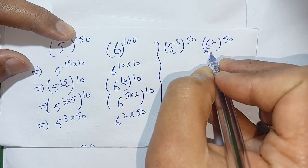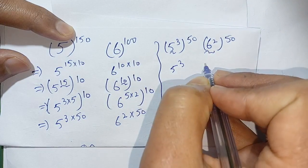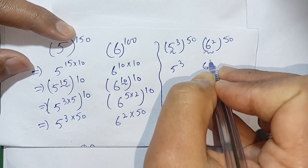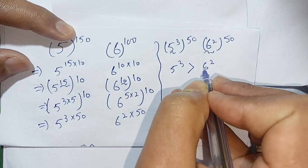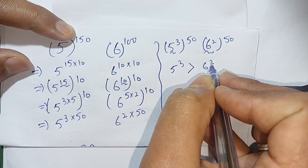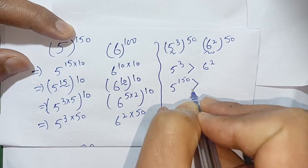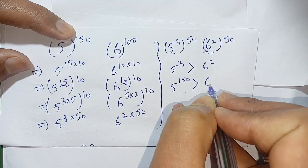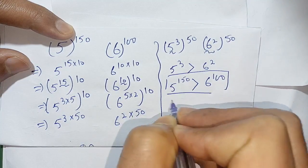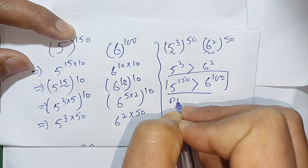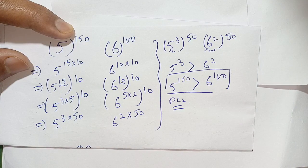Now we can compare the bases: 5 raised to power 3 versus 6 raised to power 2. Since 5 raised to power 3 is greater than 6 raised to power 2, this means 5 raised to power 150 is greater than 6 raised to power 100. If you're new here, make sure to subscribe to our channel for more informative videos. See you in the next video — bye!